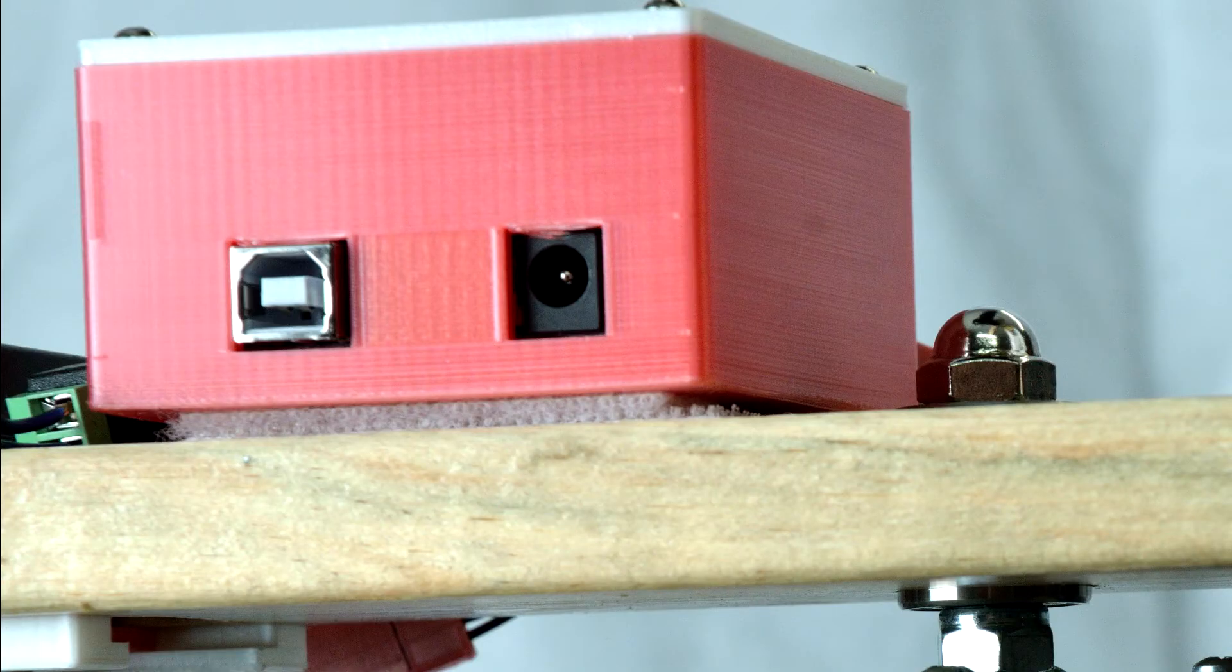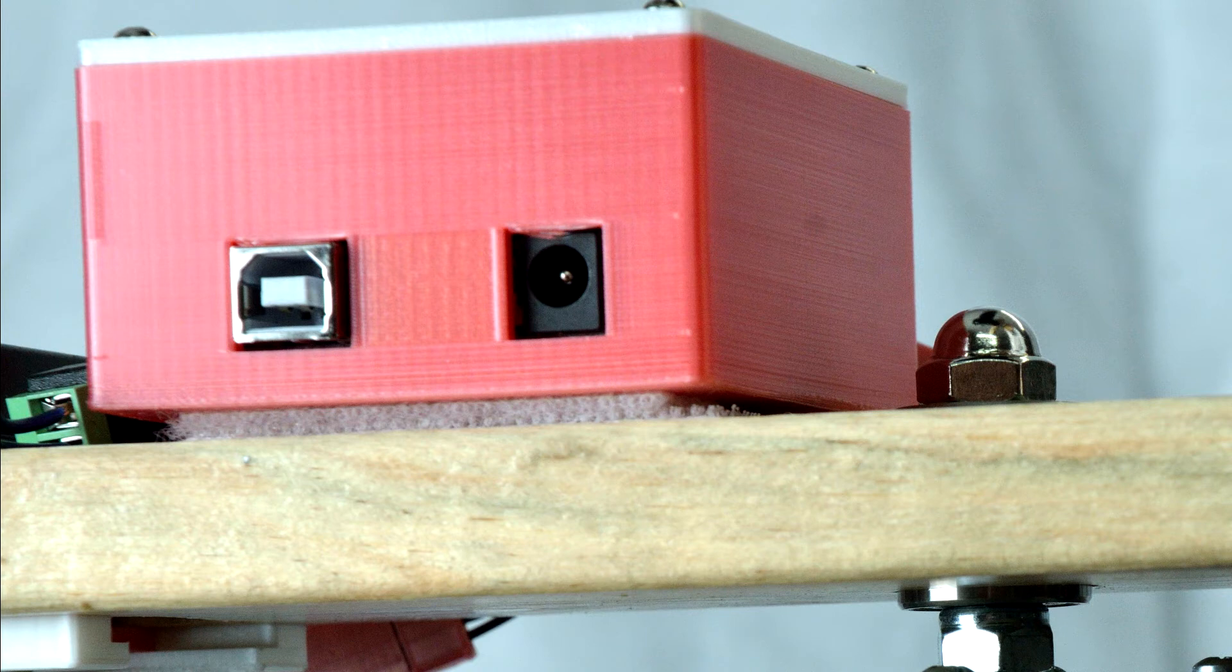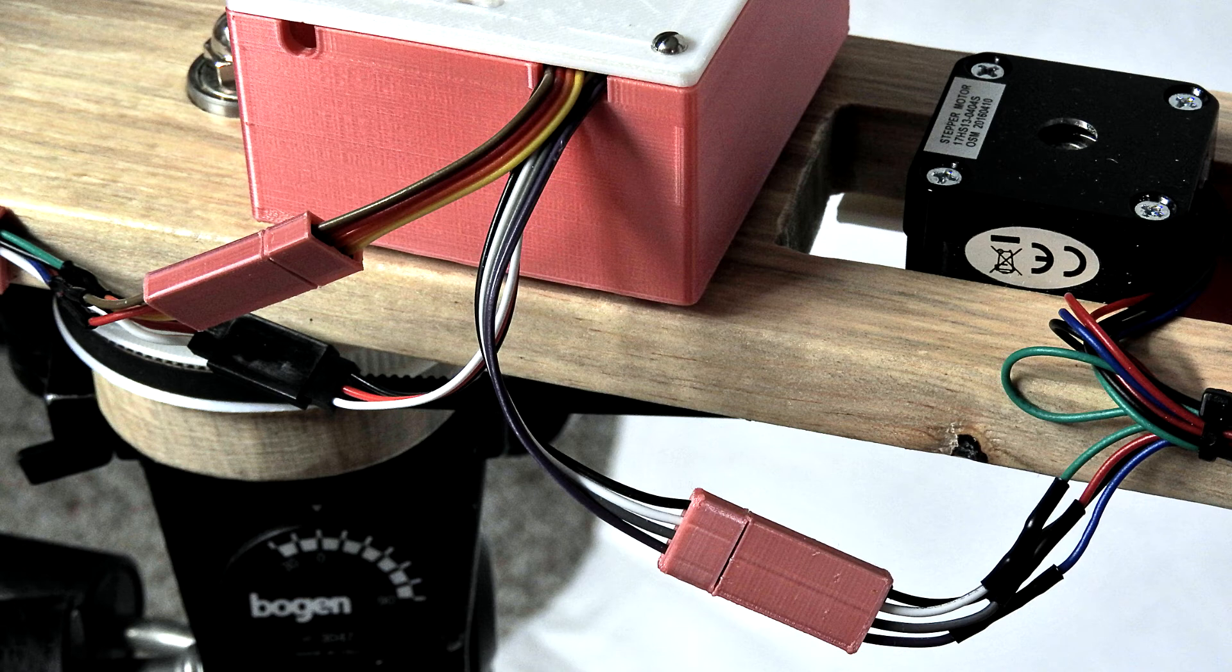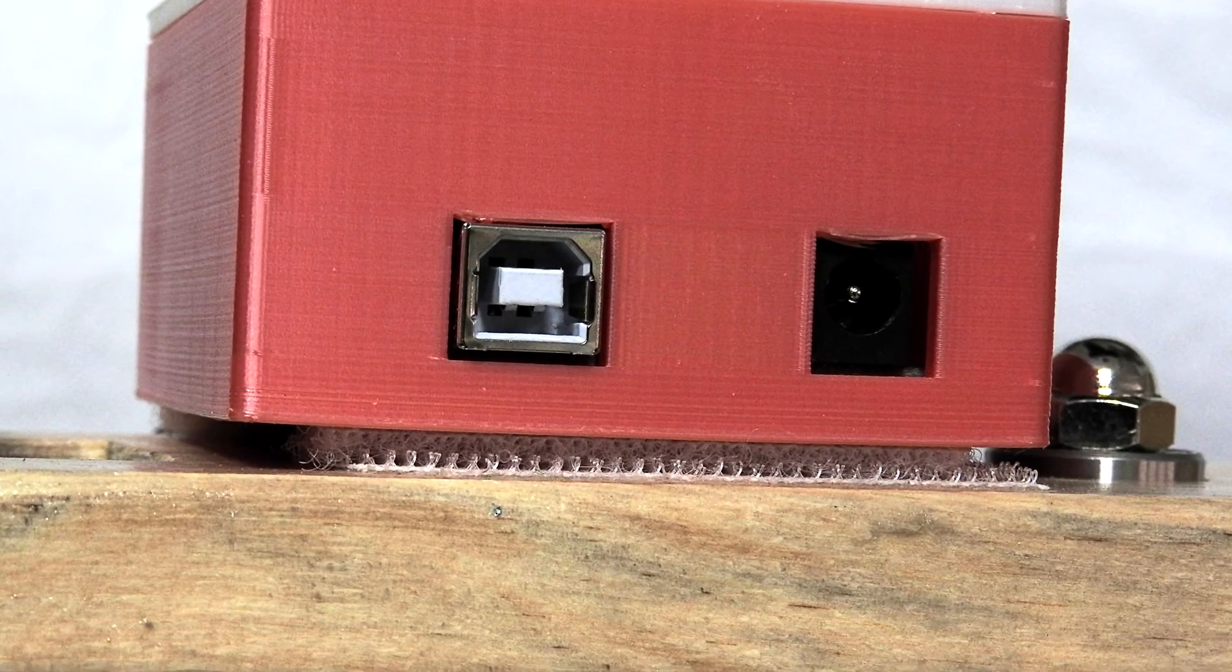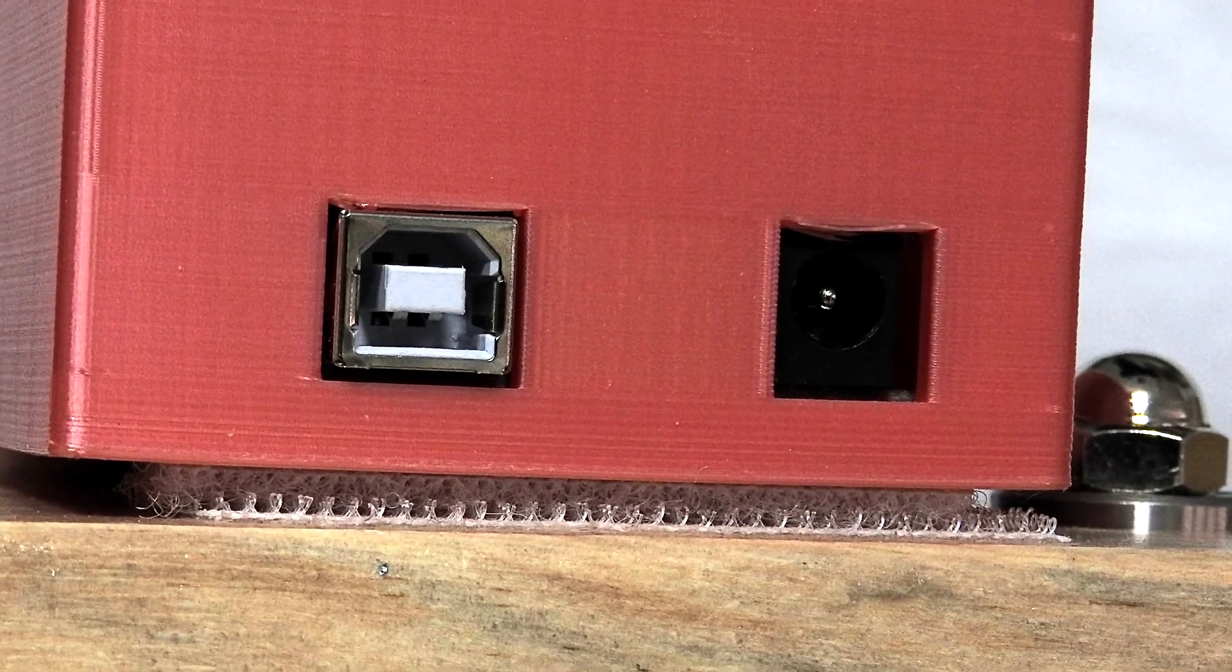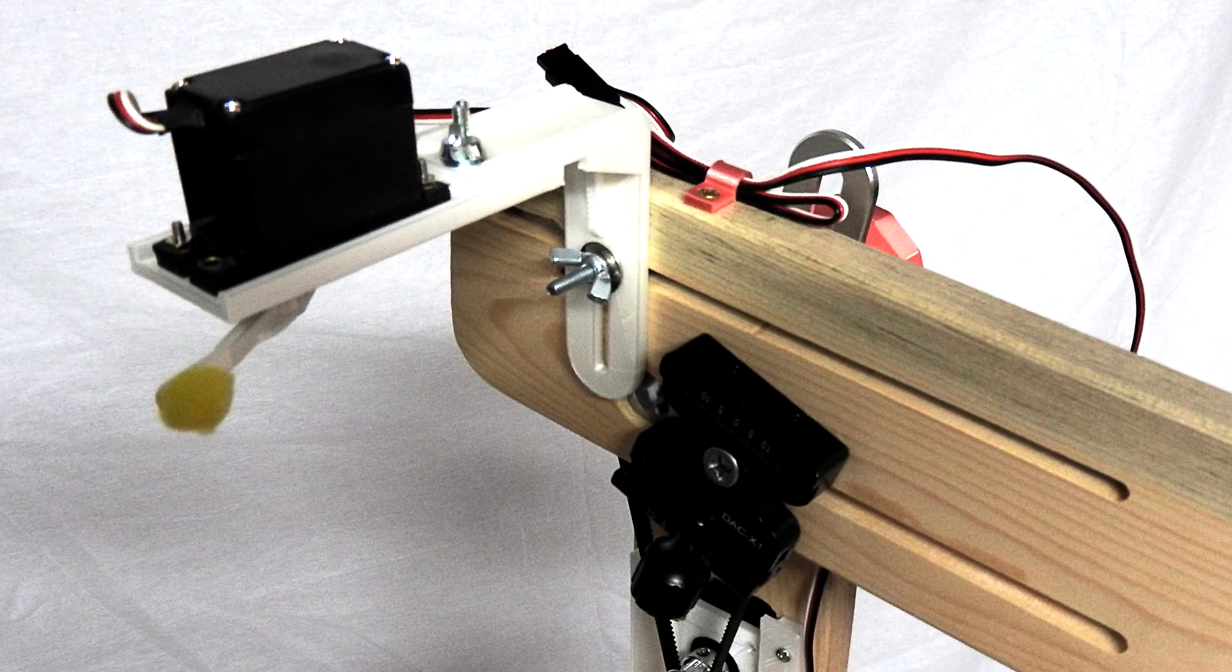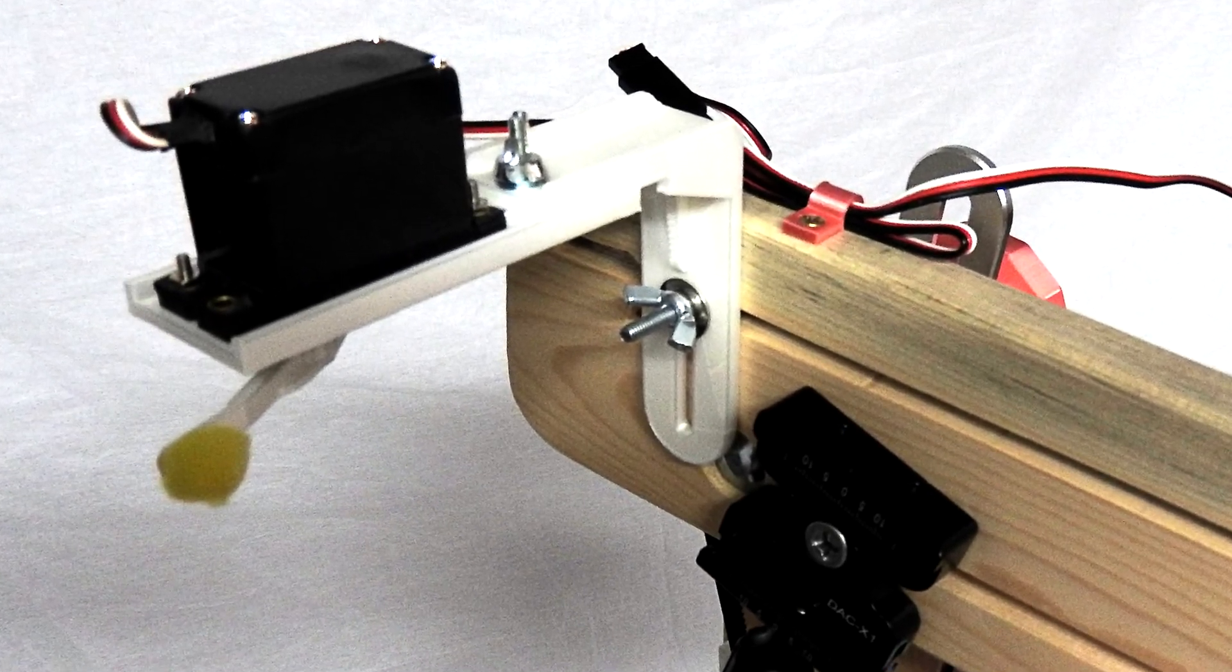Mount the Arduino and motor shield and load one of the programs. Don't mount the camera yet. Connect the motors and servo to the motor shield and connect power. Verify all things are working. Do a rough adjustment on the servo to make sure it will be positioned correctly for the camera shutter release.